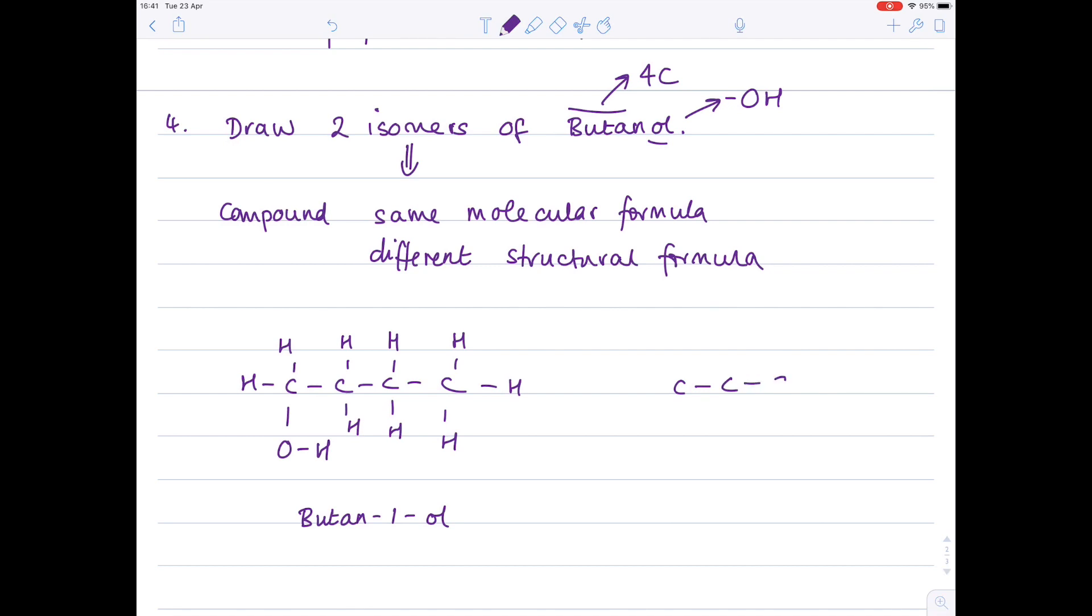To draw a second isomer now, so one with the same molecular formula but different structural formula. We're going to move that functional group over one. Make sure you've double checked all your bonds as always. And this will therefore be butan-2-ol.